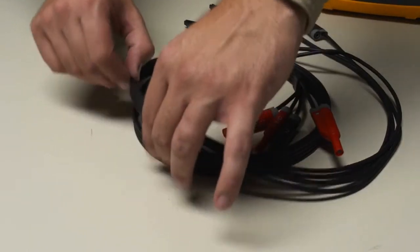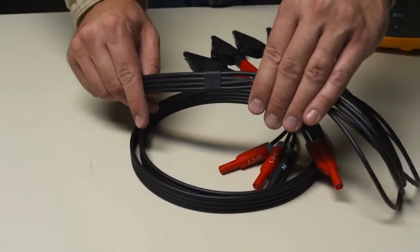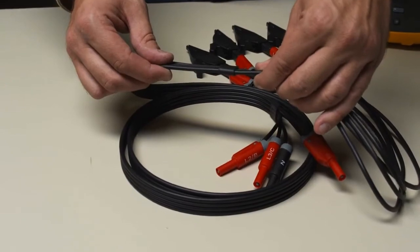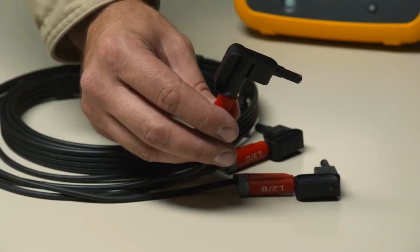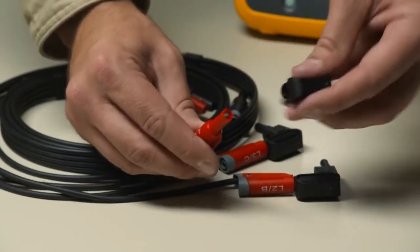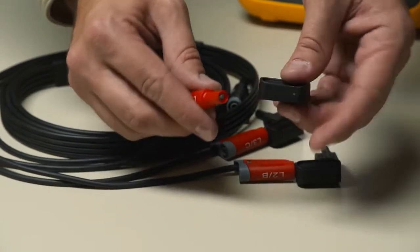Flat voltage measurement leads help ensure connections are made correctly and help eliminate tangles in the panel. The addition of the new magnetic voltage probes makes connection to terminals quick and safe.